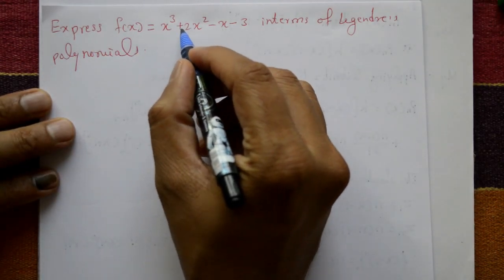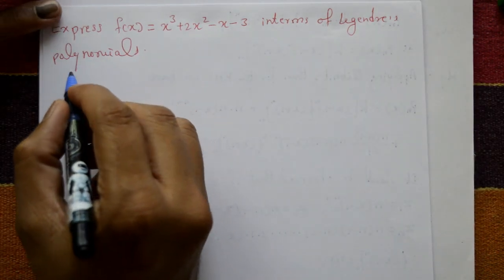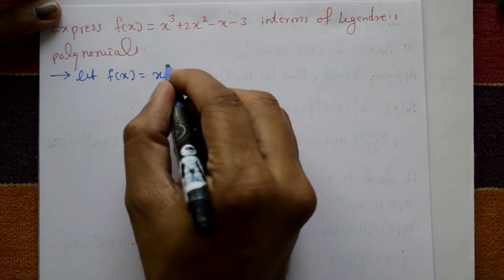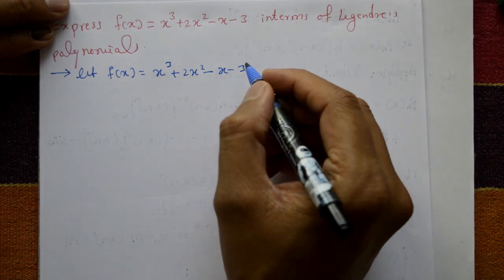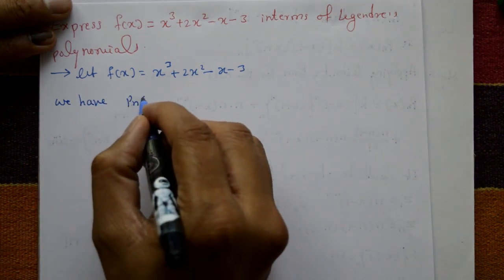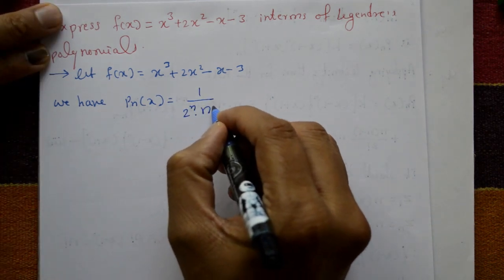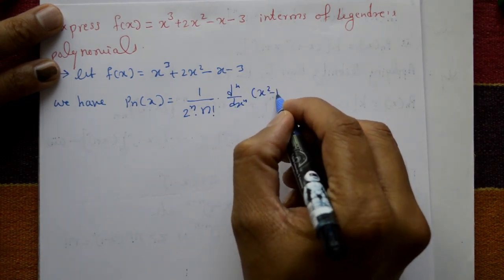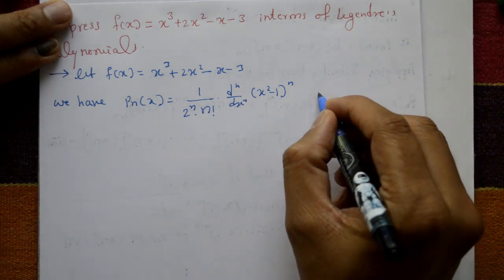Express f(x) = x³ + 2x² - x - 3 in terms of Legendre polynomials. We are using Rodrigues' formula: P_n(x) = 1 divided by (2^n · n!) multiplied by d^n/dx^n of (x² - 1)^n. We will put n = 0, 1, 2, 3.